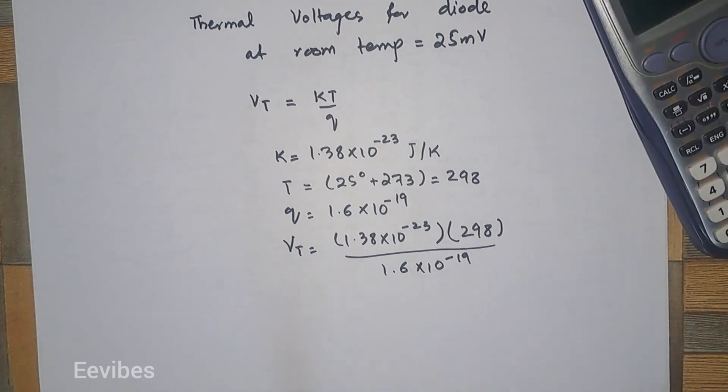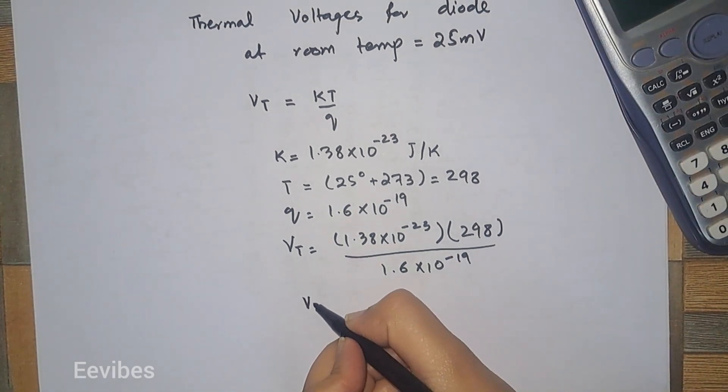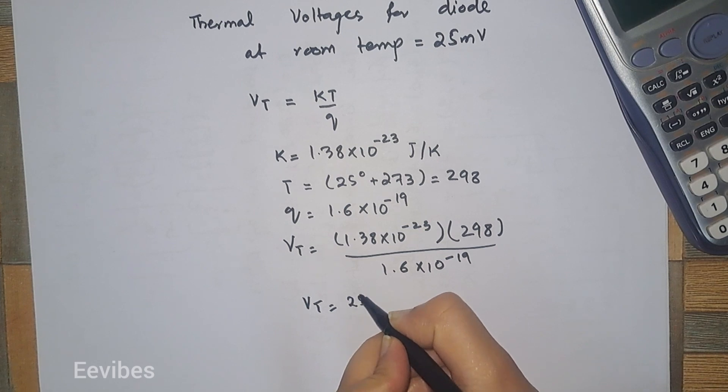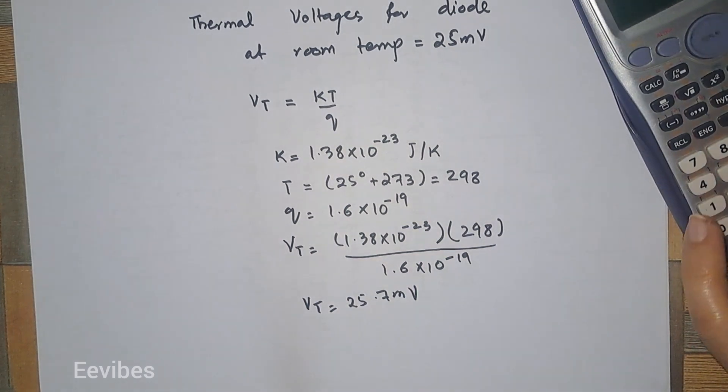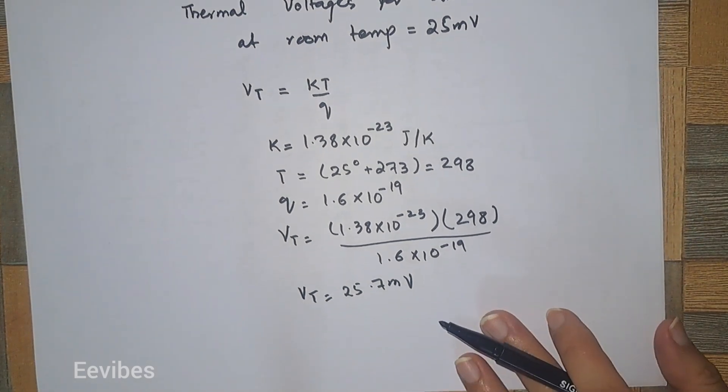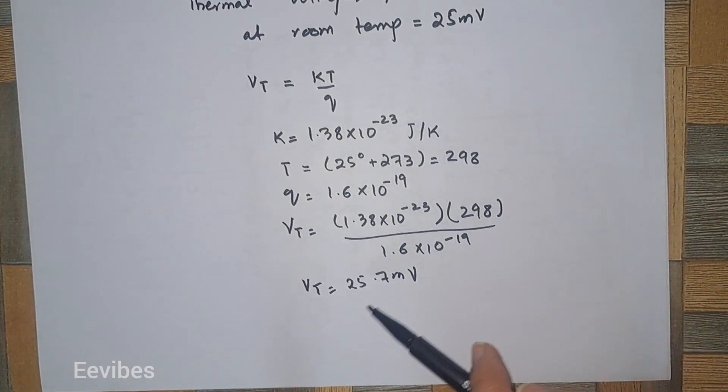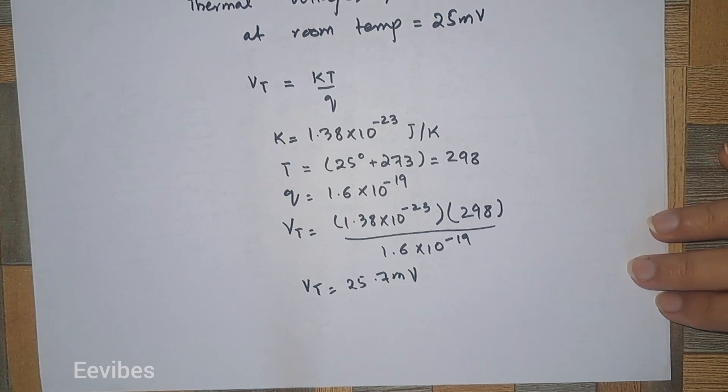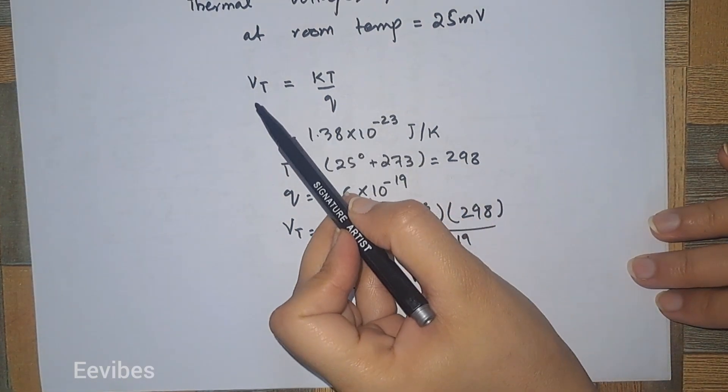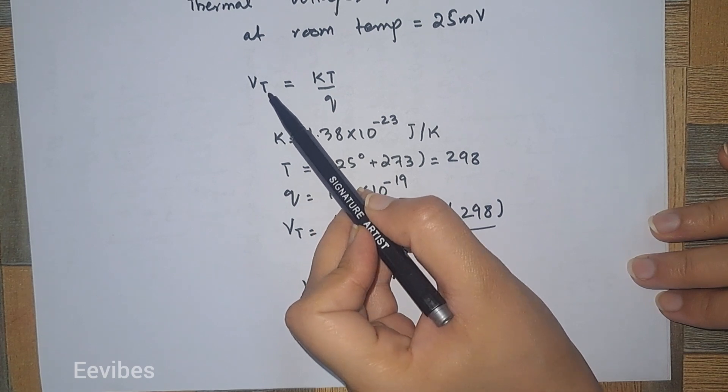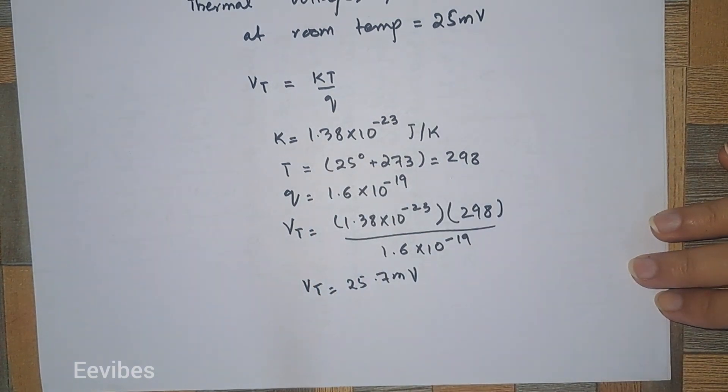So the value of VT is equal to 25.7 millivolts. In this way we generally use the value of the thermal voltage equal to 25 millivolts at room temperature. And you can see as you keep increasing the value of the temperature, the thermal voltage also starts increasing. Thank you for watching.